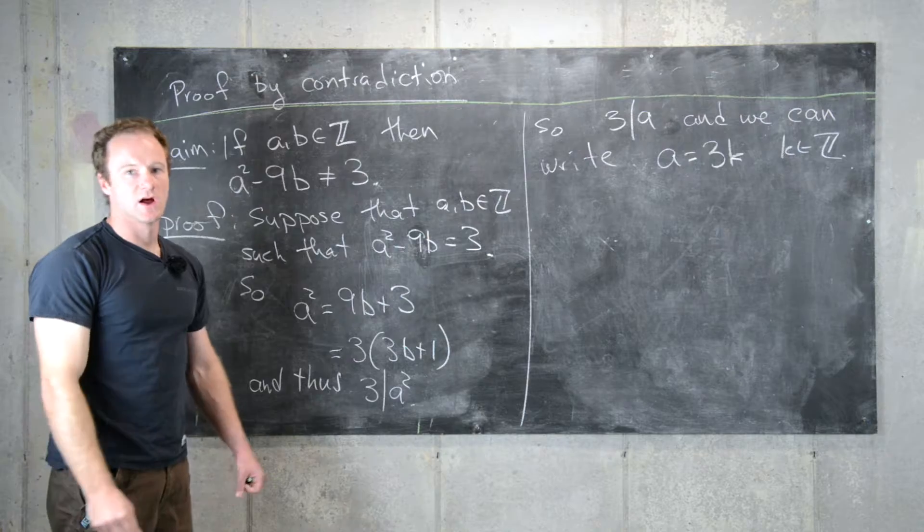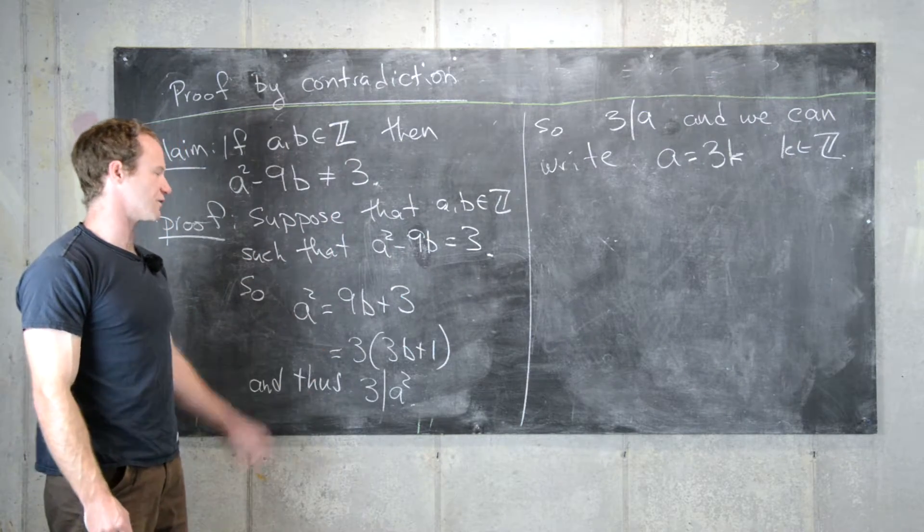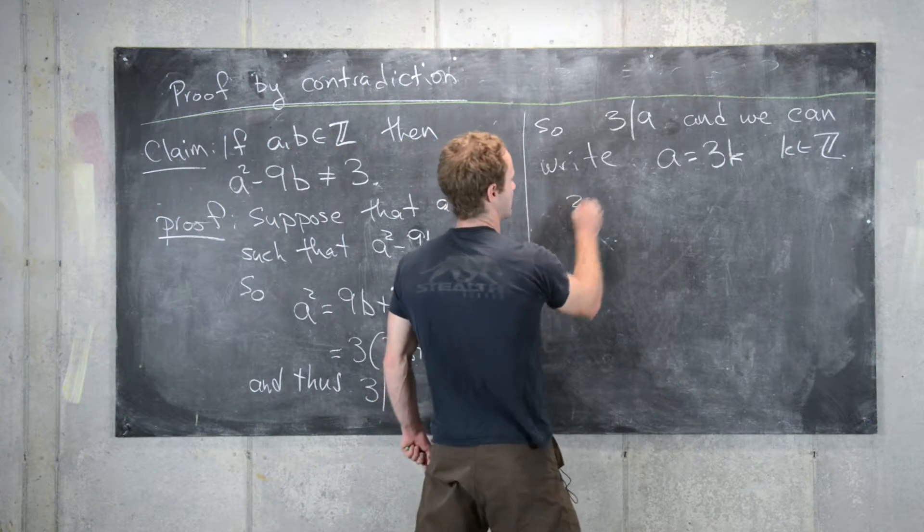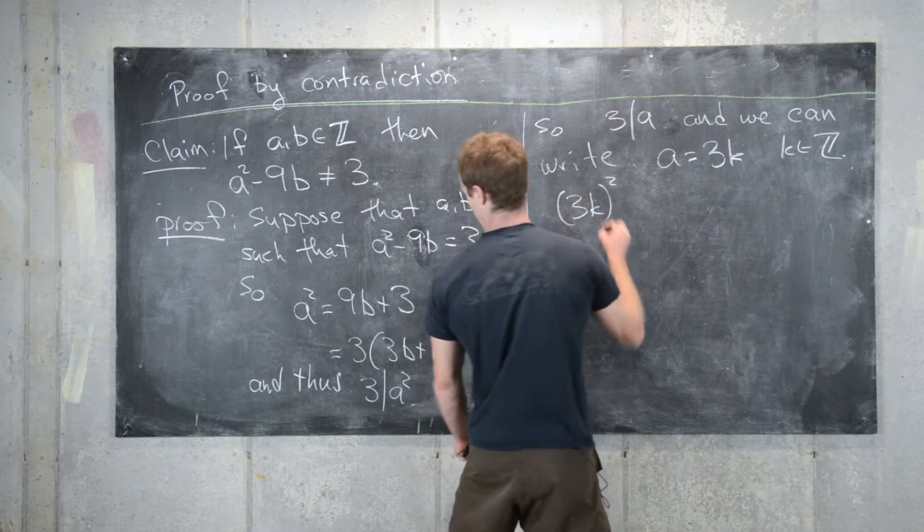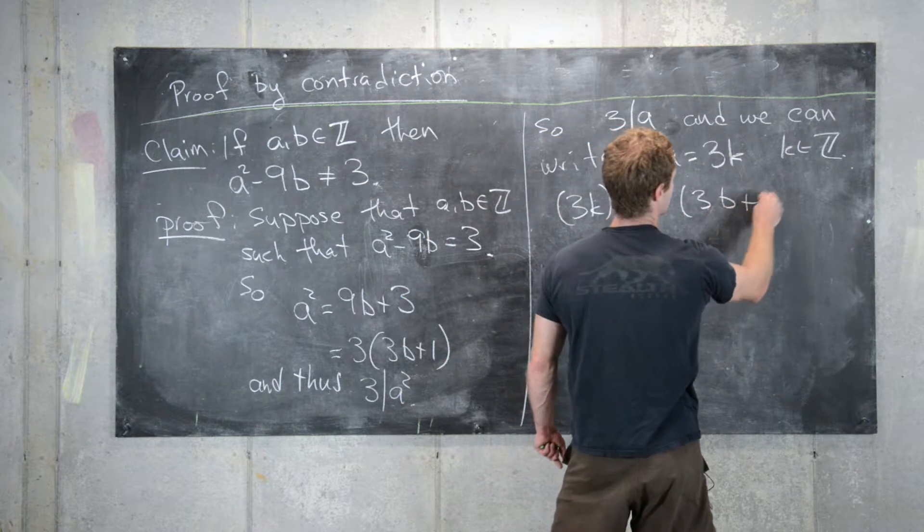So now that we're set up to that point, we'll plug that back into this equation which we derived, and that'll give us 3k quantity squared equals 3 times 3b plus 1.